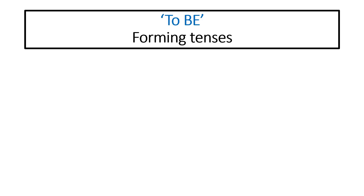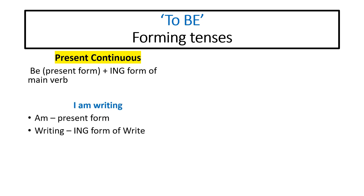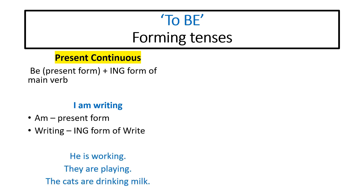The 'to be' form verbs help determine tense structure. For example, present continuous tense: here, the present form of 'be' is used, and with it the 'ing' form of the main verb. For example: 'I am writing.' Here 'am' is the present form of 'to be', and 'writing' is the ing form of main verb 'write'. More examples: 'He is working', 'They are playing', 'The cats are drinking milk.' In each case, we use the present form of 'to be' — is, are — and then the ing form of the main verb: working, playing, drinking.